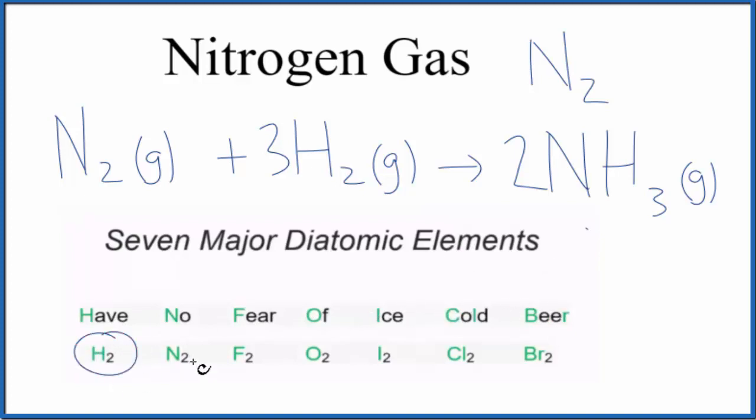We have the hydrogen gas and the nitrogen gas we just talked about, but also fluorine, oxygen, iodine, chlorine, and bromine gas. They'll all be diatomic when they're by themselves.